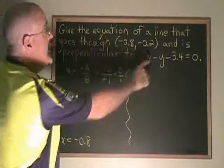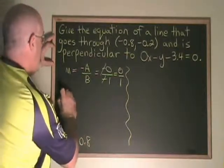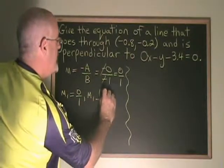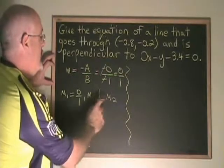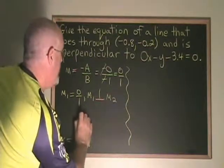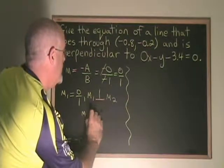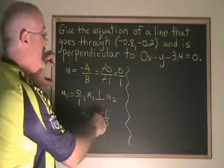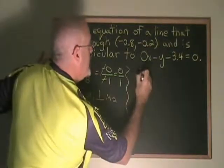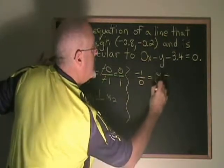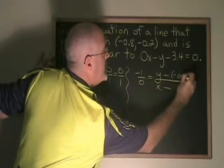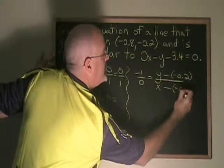Since m1 equals 0 over 1, and m1 is perpendicular to m2, the slope of the perpendicular line must be the negative reciprocal of 0 over 1. Therefore, m2 is equal to negative 1 over 0. And I can use this fraction to find the equation of the line I'm looking for. Negative 1 over 0 is equal to y minus, and I use this point. So it becomes y minus negative 0.2 over x minus negative 0.8.